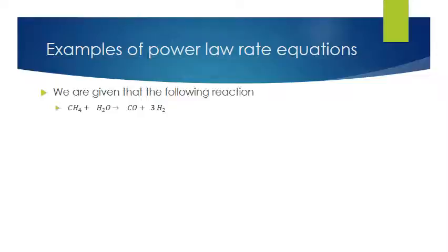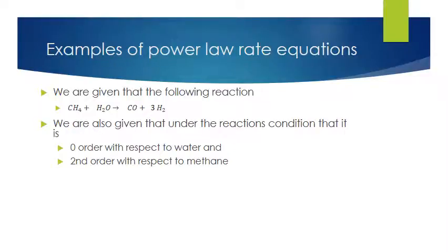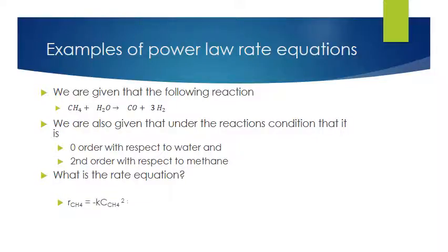Let's do an example using the steam reforming of methane. Under the reaction conditions, the reaction rate is zero order with respect to water and second order with respect to methane. The rate equation for methane is: rate of formation of methane equals minus K times the concentration of methane squared. Water is zero order, so the concentration of water to the power zero is just one — water does not appear in the rate equation. By stoichiometry, the rate of formation of methane equals the rate of formation of water, equals minus the rate of formation of CO, and equals minus one-third the rate of formation of hydrogen.